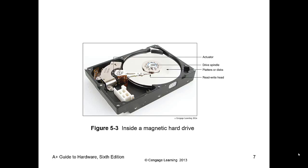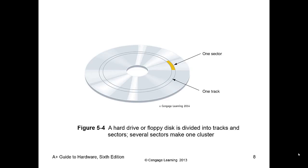This is our magnetic hard drive. It has two platters, a read-write head, and the mechanism to move that read-write head. Taking one of those platters, we can see the tracks and sectors. A track is a circular portion, and a sector is where you chunk it out like a pizza slice. One sector is just one track.